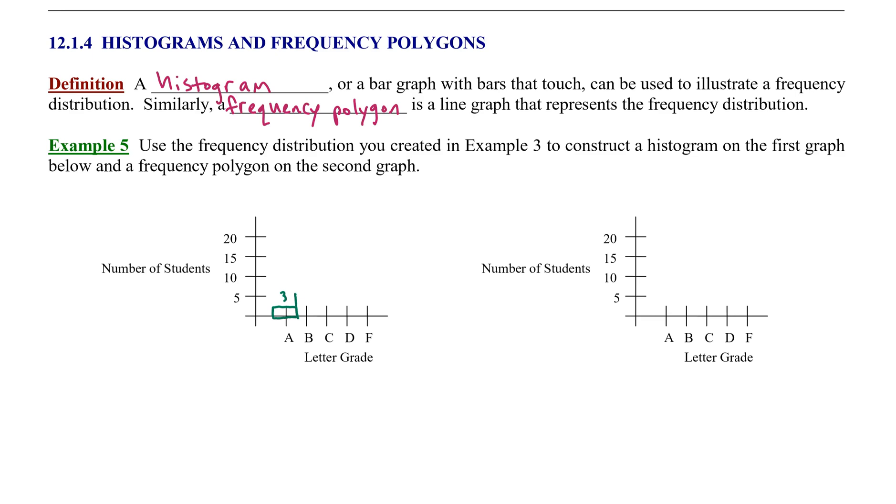On our frequency distribution, the B's had a frequency of 5. Notice I'm writing the frequency at the top of the bar—it just makes it easier to read. Also observe that the bars are centered over the data point and the bars touch.